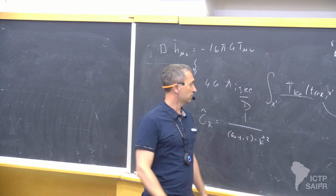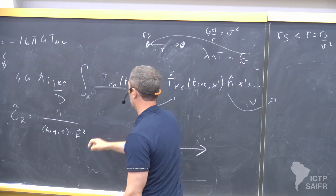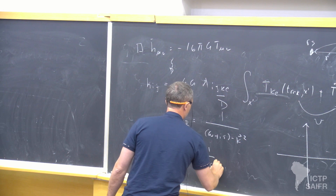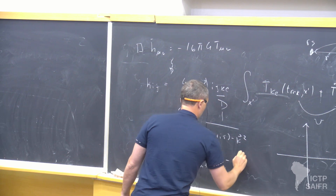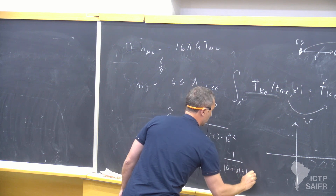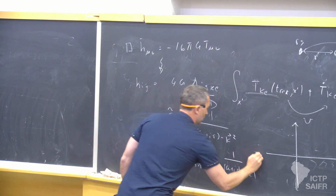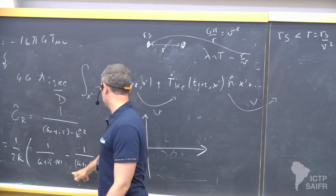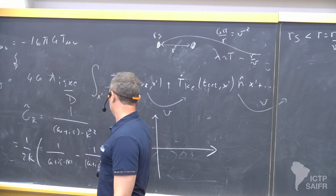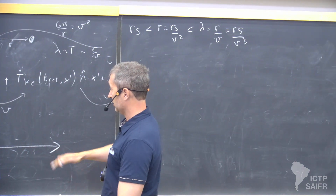The Feynman Green function has slightly different poles. If I look at the poles as omegas, I can expand it as 1 over (omega + i epsilon - |k|) minus (omega + i epsilon + |k|). This is just a mathematical identity. If I put to a common denominator, this gives me omega squared minus k squared, and then 2k. You see clearly that the two poles are on the same side.